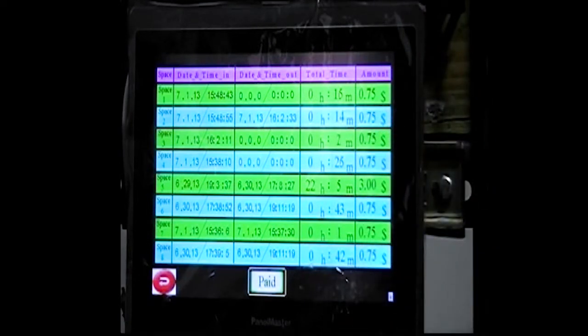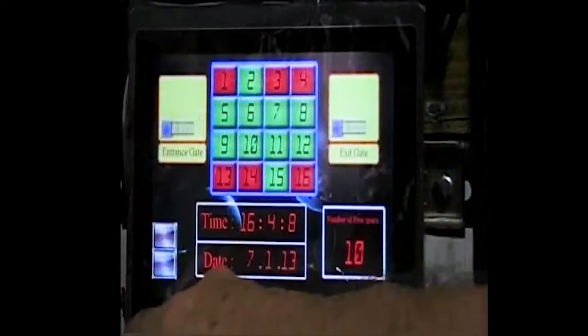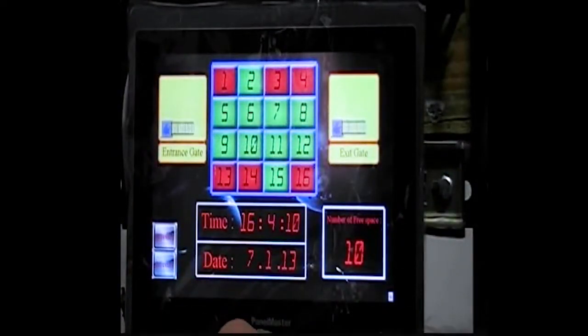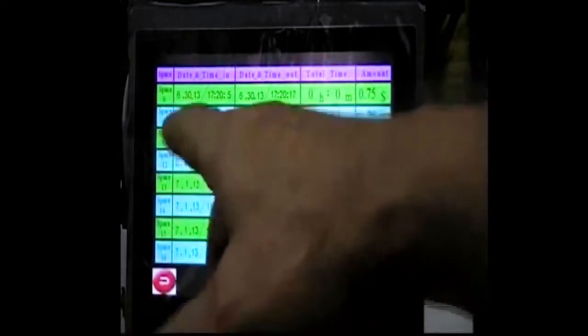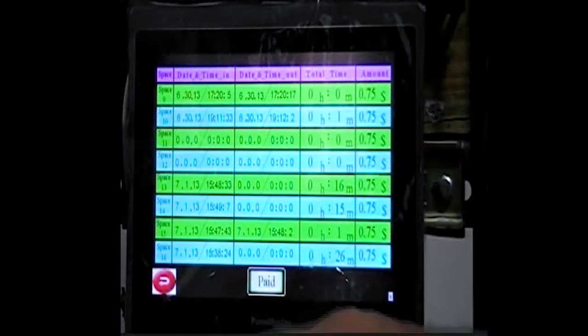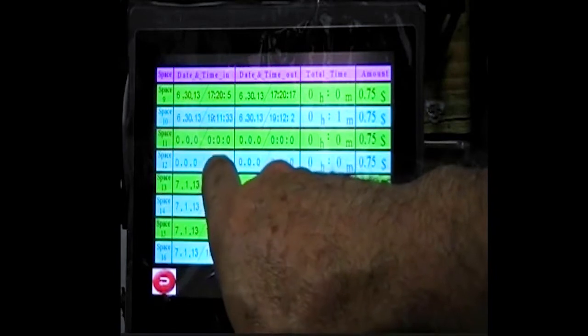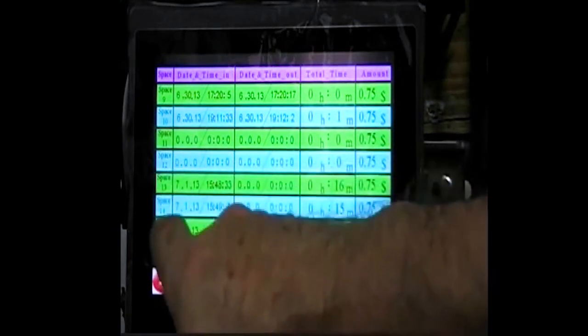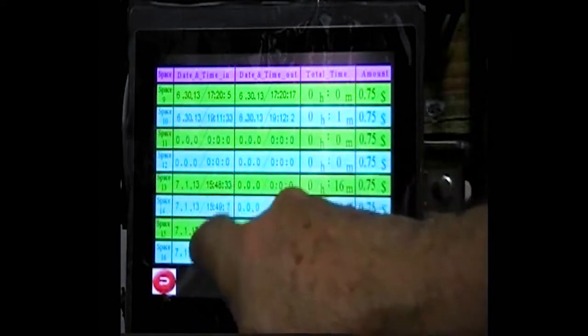If I want to go to the next screen, this is for screen number for car spots, spaces from 1 to 8. If I want to go to the next, I check the next spaces records. This is the next screen, and it's from 9 to 16. The ones that are 0, 0 in the date and time in, that means they are unoccupied. For example, 11 is unoccupied.